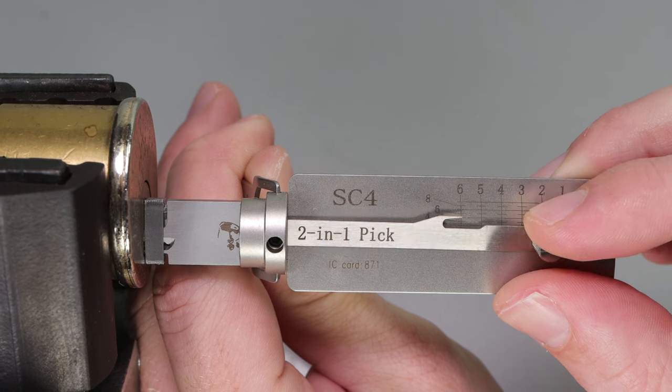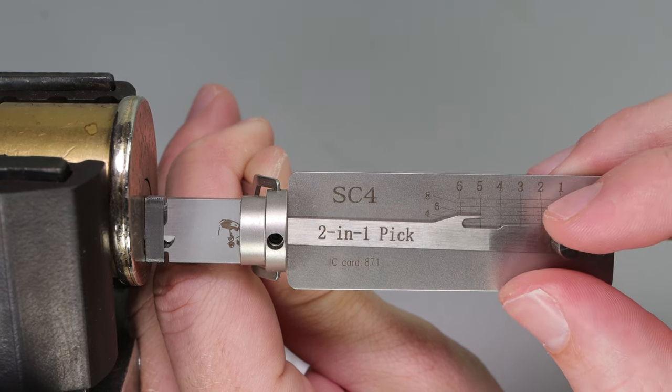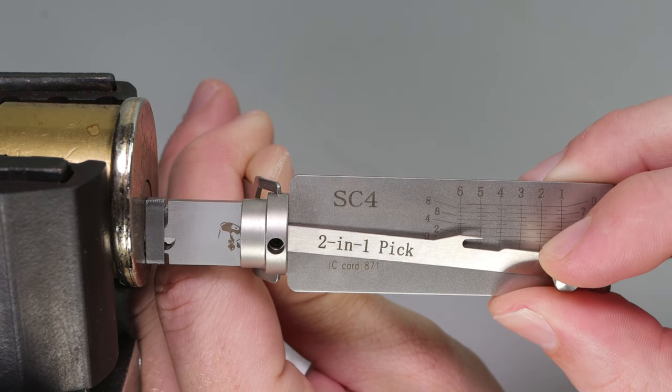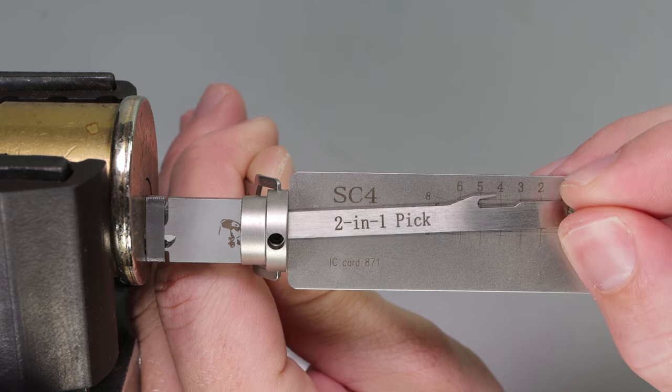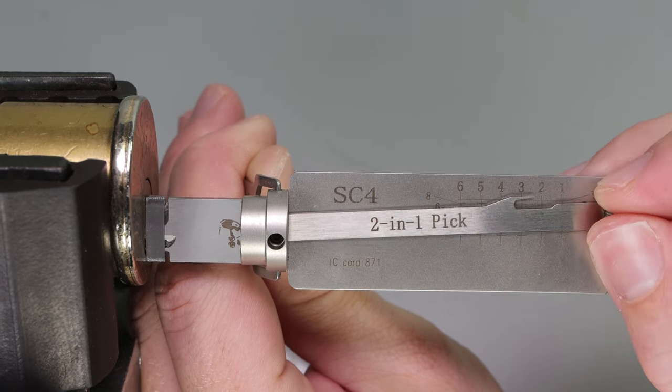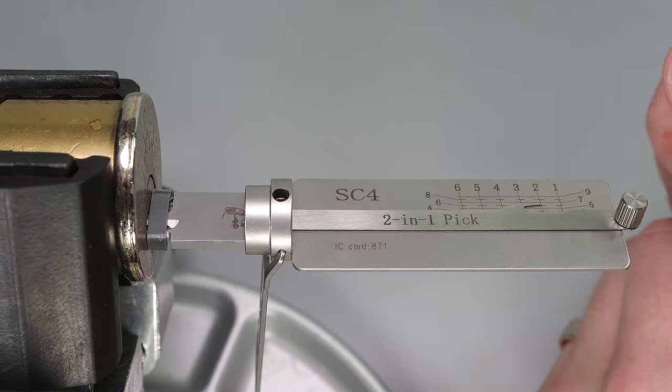In the very back, we are getting a binder right away. I got a click, and that feels set. Let's see in position 5. Let's go to 4. 3 got a click. 2 got a click. And we opened up the lock.